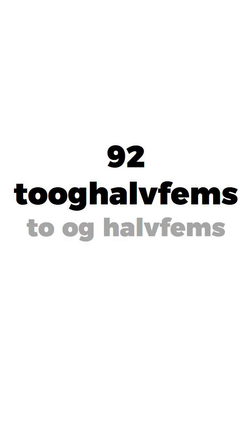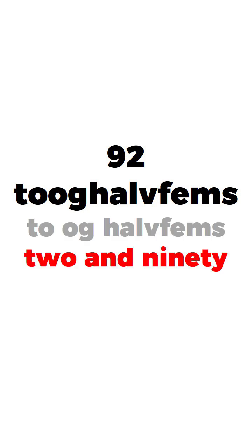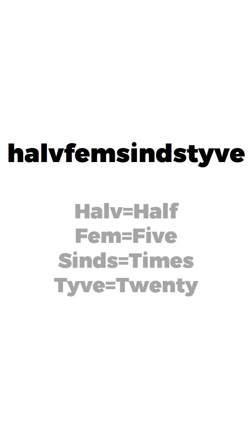For example, 92 — 'tooghalvfems'. 2 and 90. But translated, it means 'half-fifth', because it comes from 'halvfems gange tyve' — half-fems.